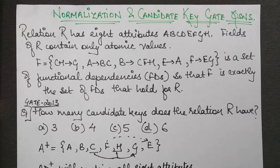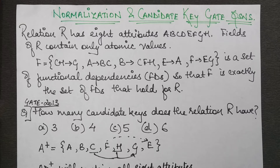Hello friends, in this session we are going to discuss a normalization question from GATE 2013. Before finding the highest normal form of a table, the first step is to find the candidate keys. This will be a revision of both concepts: how to find the candidate key, and how to find the highest normal form of a particular relational schema.